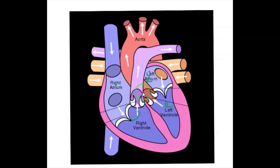The left atrium is smaller than the right atrium. The two ventricles are separated from each other by the interventricular septum.